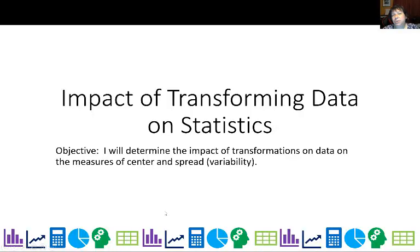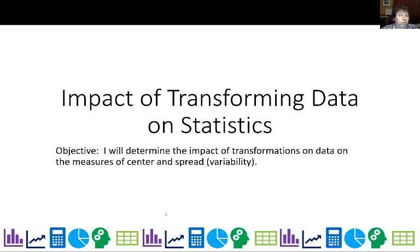We've added z-score and percentile to our measures of data. We have measures of location, like the five-number summary and the mean. We also have measures of spread, which include IQR, standard deviation, and technically the range as well. We won't talk much about range because our measures of spread tend to be standard deviation or IQR, more frequently standard deviation.